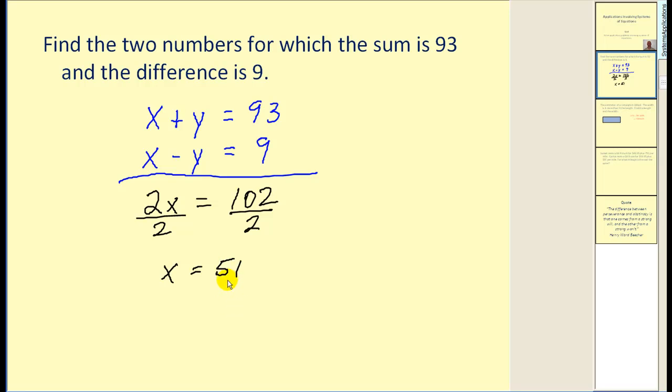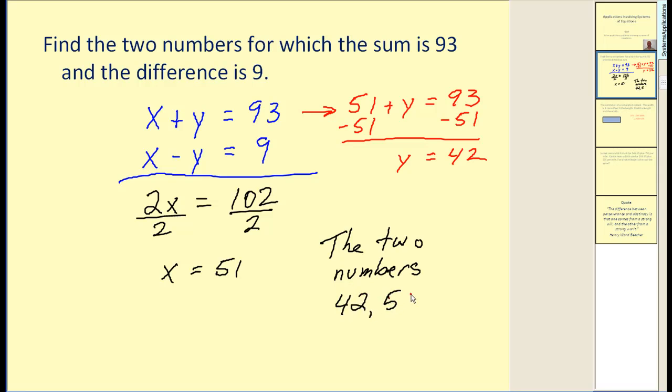Now in order to find the other number, we need to substitute x equals 51 into either of these equations. I will go ahead and just use the first equation. So since x is 51, we can solve this equation for y by subtracting 51 on both sides. And we can see here that our second number will be equal to 42. So we can say the two numbers whose sum is 93 and whose difference is 9 would be 42 and 51.